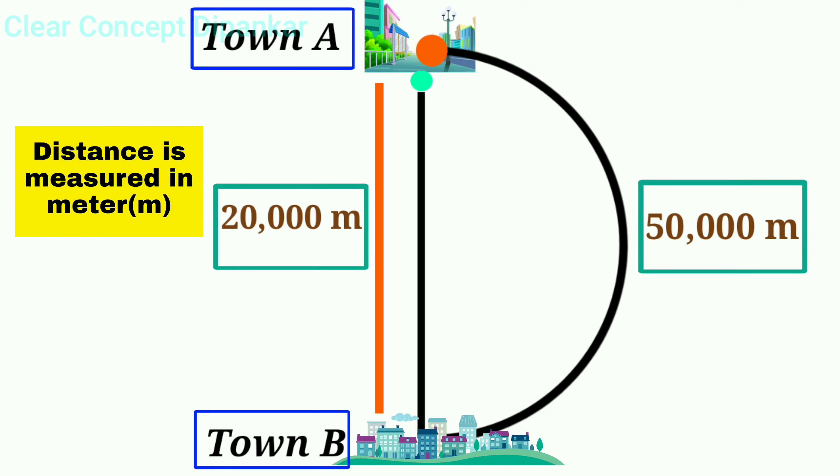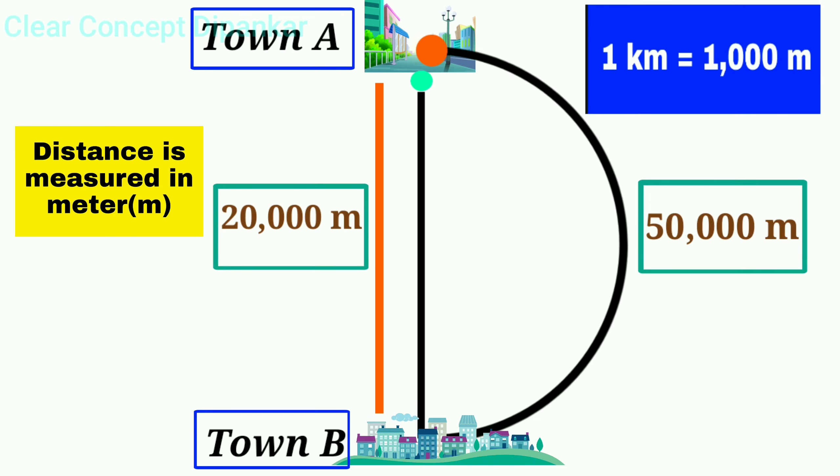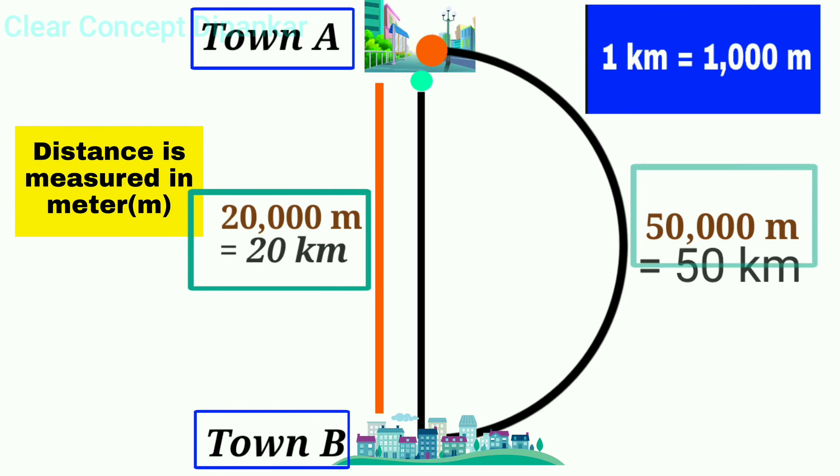Ok, nobody likes big numbers. So we should always know 1 kilometer is equal to 1000 meters. In our example, we can say the straight distance is 20 kilometers but you traveled 50 kilometers.